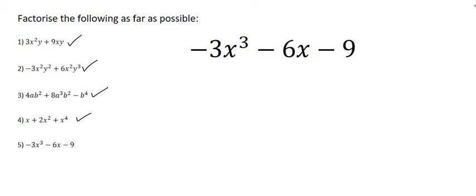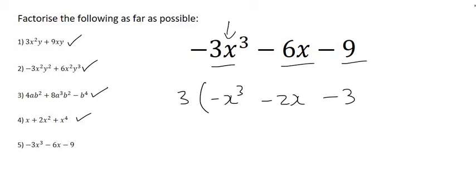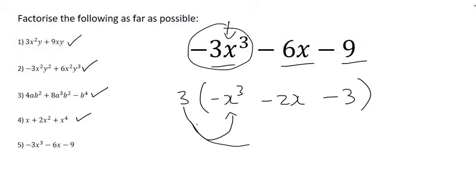Moving on to the last question. We can't take out an x because the last term does not have one. However, they all share a common number, so we can take out a 3. In term 1 we'll be left with negative x cubed, in term 2 negative 2x, and in term 3 negative 3. We can verify this: multiplying 3 back gives minus 3x cubed for term 1, minus 6x for term 2, and minus 9 for term 3, which matches the original expression.